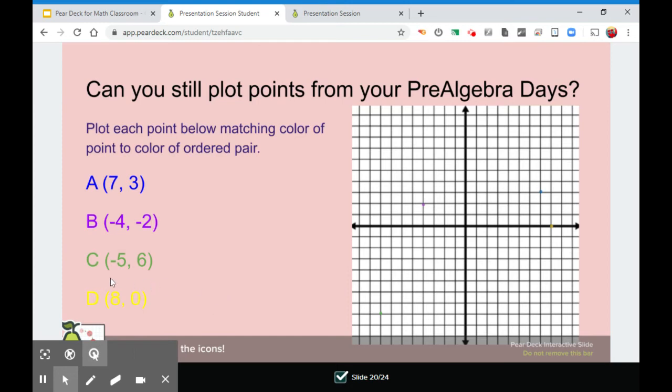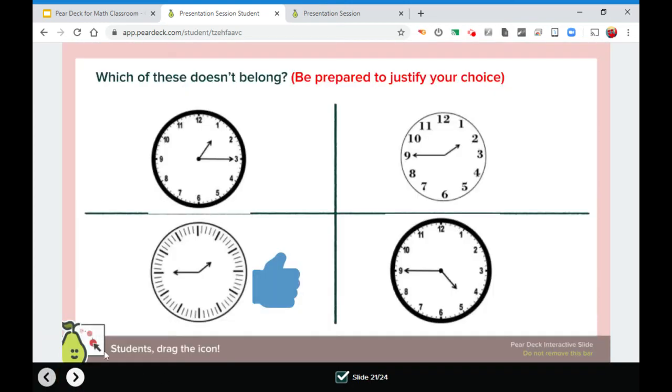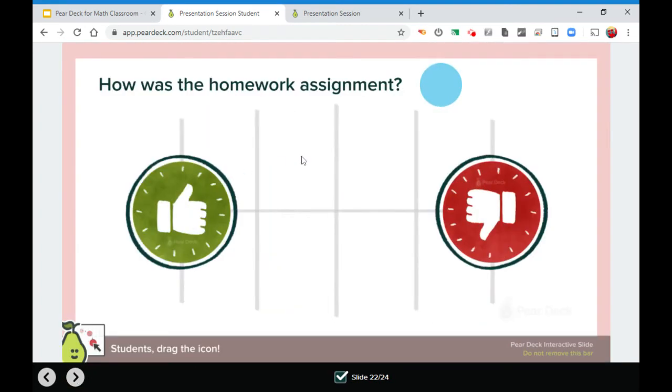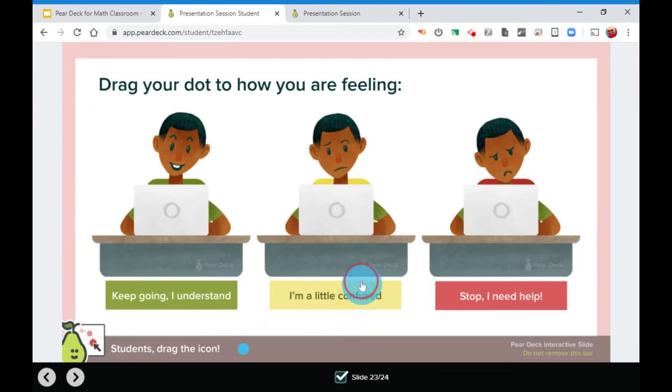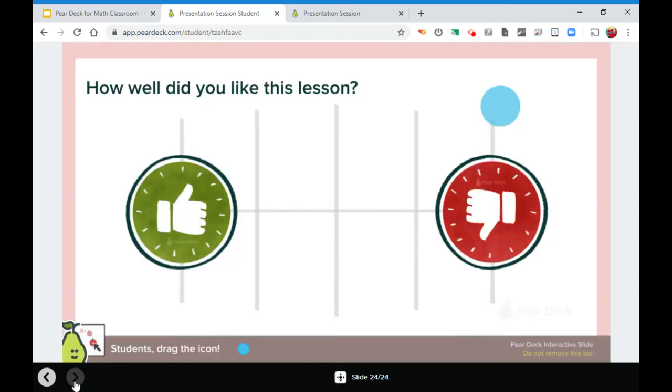Next one. Here's this. They could drag the thumbs up somewhere else wherever they want to vote. So they all get their vote. How was the homework assignment? Draggable. It was great or horrendous or somewhere in between. They put where they think it was. Here's a good one. How I need some help, I keep going, I understand. You get a good feel for where your students are at. And then how well they like the lesson, give you a thumbs down or thumbs up or somewhere in between.